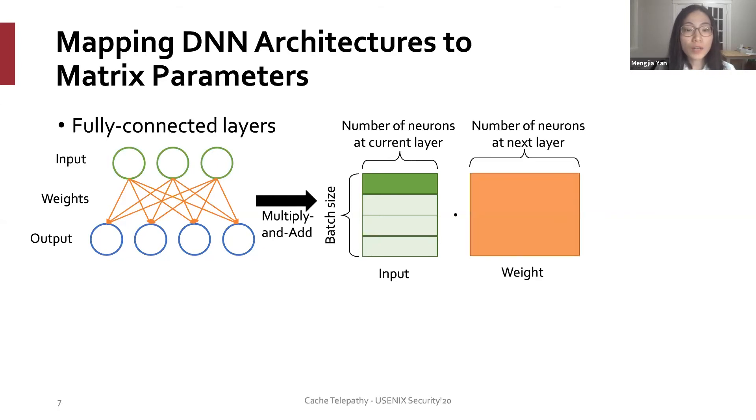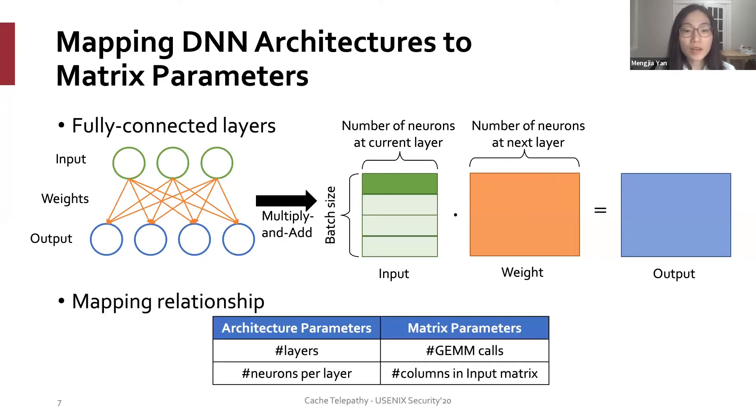We can organize all the weights as a matrix too. The weights for one output neuron are gathered as a column. Therefore, the number of columns in the weight matrix is equal to the number of neurons at the next layer. With this, we have mapped the computation of fully connected layers as a matrix multiplication. We can summarize the mapping relationship in this table.